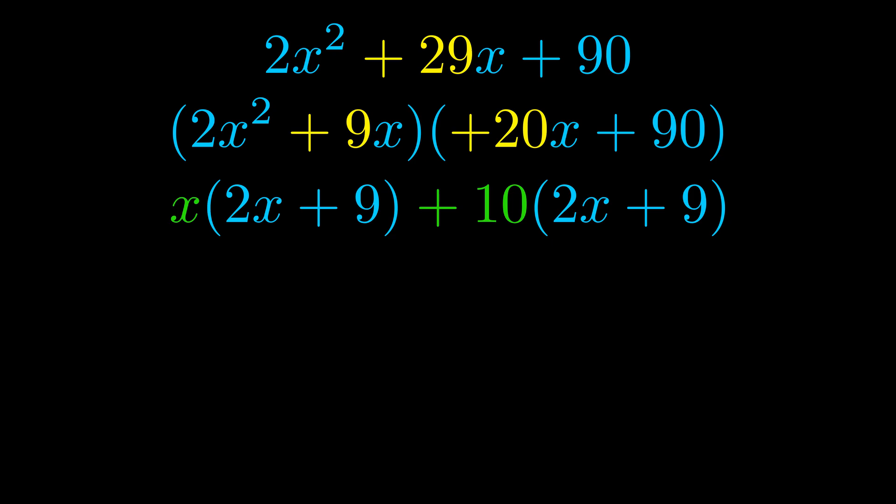Notice also how what remains inside of the parentheses is the same in both cases. The blue values are the same. Those blue values will become one of our factors and we will combine the two green values, the GCFs that we pulled out, to get the other one. And that is our fully factored equation.